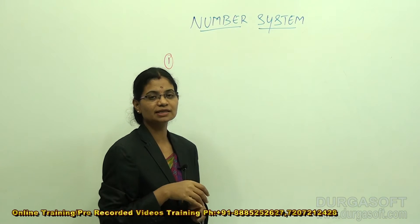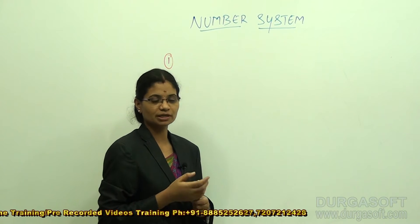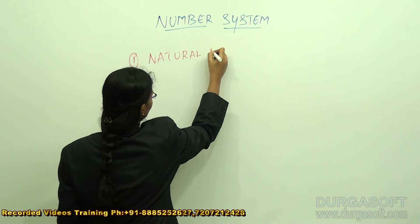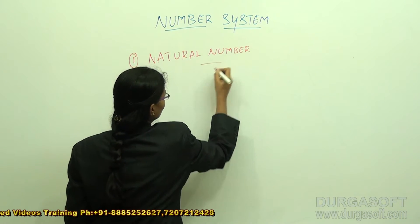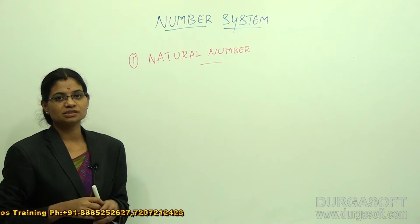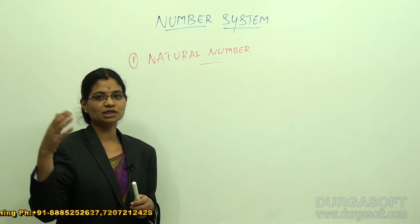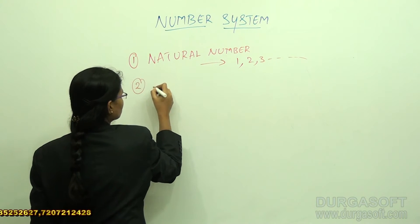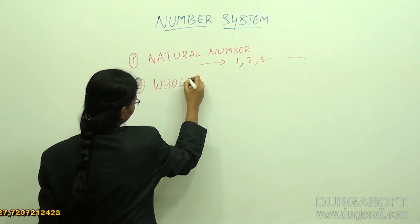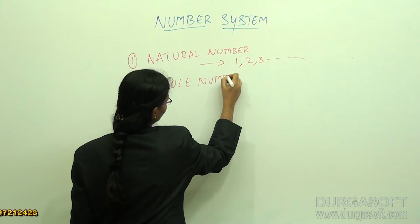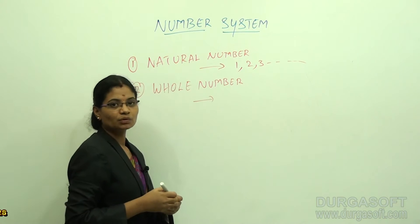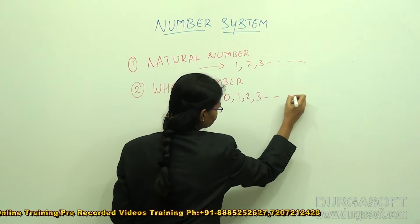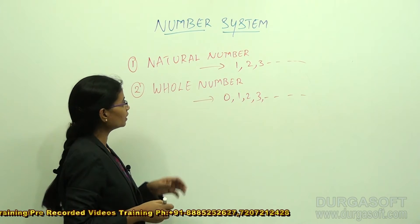First, let's discuss what numbers are there in mathematics. Natural numbers start from 1, 2, 3, and so on. Whole numbers start with 0 — 0, 1, 2, 3, and so on. So natural numbers start with 1 and whole numbers start with 0.